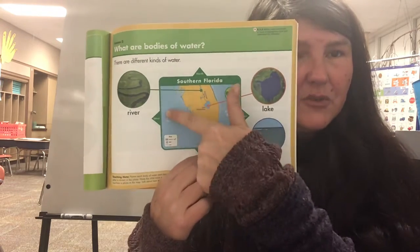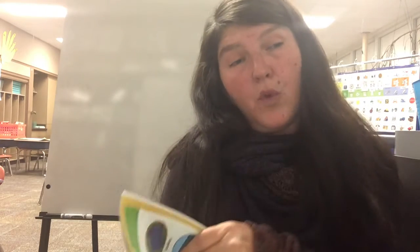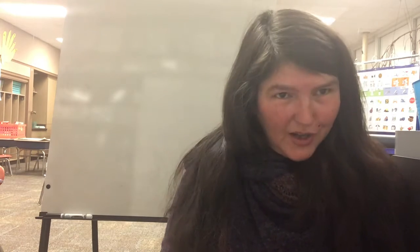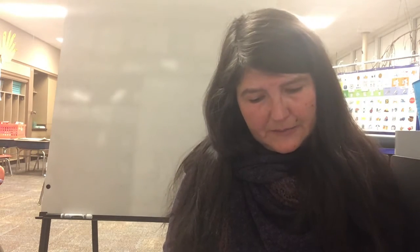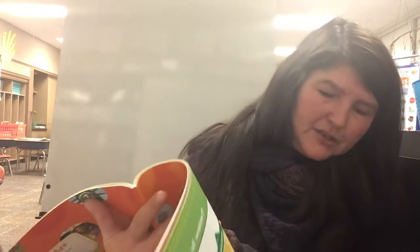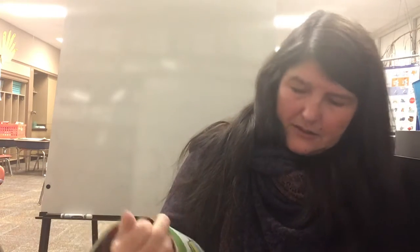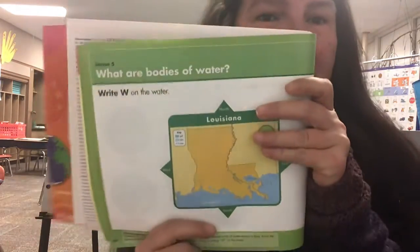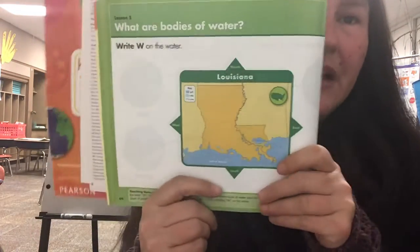So here we have rivers, a lake, and then this is the ocean. Those are different types of water. Some others that I can think of are creeks and springs, and ponds — those are some other kinds.